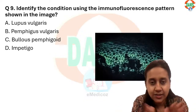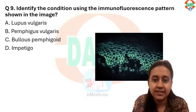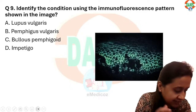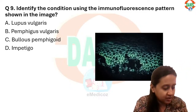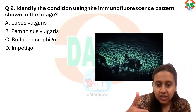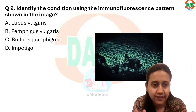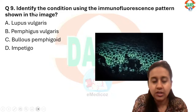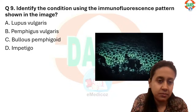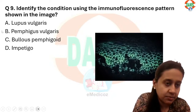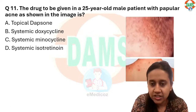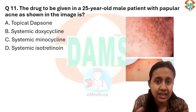This is the easiest question you can get in your exam — this is the fish-net or chicken-wire pattern of pemphigus vulgaris. The intercellular deposits give a fish-net or chicken-wire appearance. So the answer becomes option number two: pemphigus vulgaris.